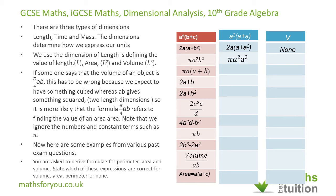For the next one, if A equals B, we get A squared plus A squared plus A squared plus A to the power of 4. This is not valid in terms of length — not valid for any of perimeter, area, or volume. So the answer for this one is none.